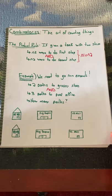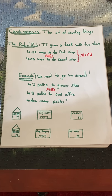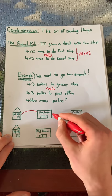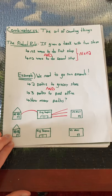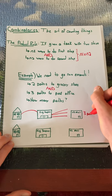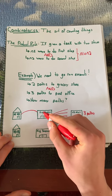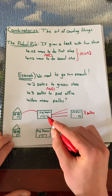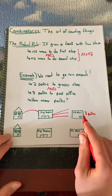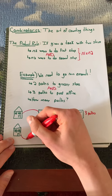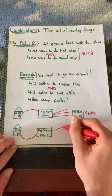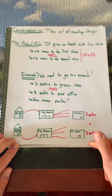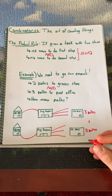Using the product rule, we know that this is just three times two, or six paths. I've also drawn it out so you can really see it. From our house, if we take one of the two paths to the grocery store, we have three paths we can take to the post office — giving us three possible routes from that path. Taking the other path to the grocery store again gives us three more paths to the post office, for a total of three plus three, or six paths. There we've validated the product rule.